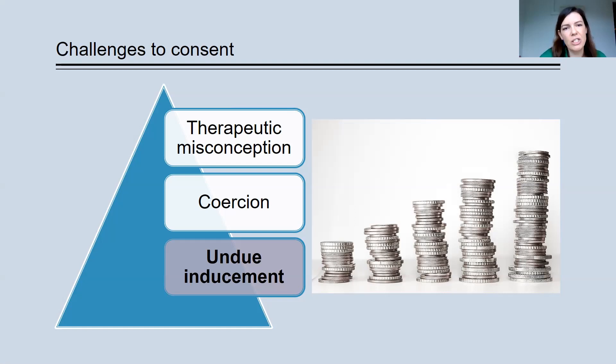So the empirical literature on undue inducements, I think, is quite unclear. And it's important to note that the concern about undue inducement needs to be weighed up against the concern about not paying people a fair amount for the burdens that they have undertaken. And particularly when we're recruiting healthy volunteers who are participating in research to generate knowledge that will benefit the entire community. It's important that they are fairly compensated for the risks that they undertake.